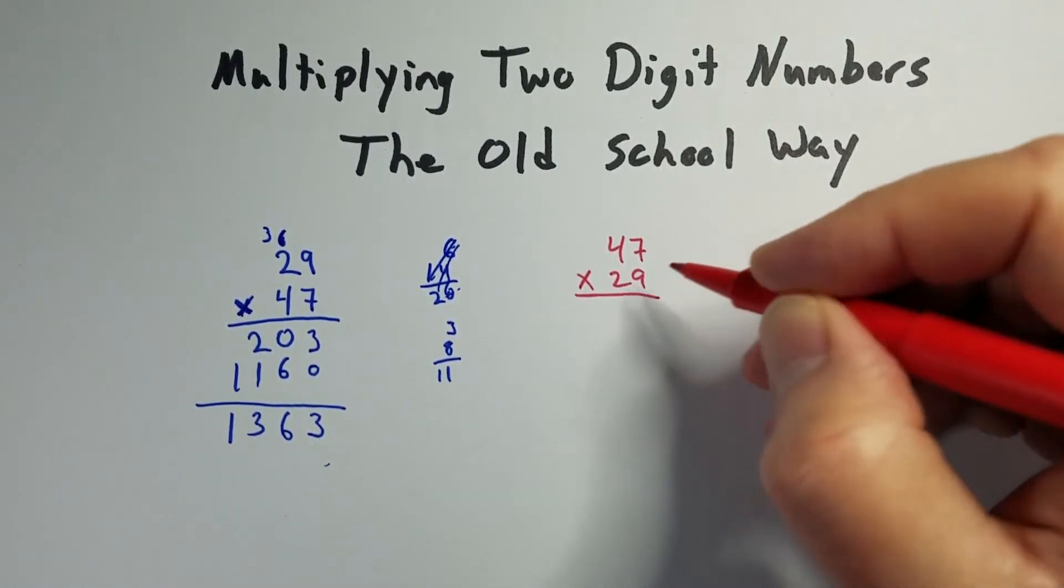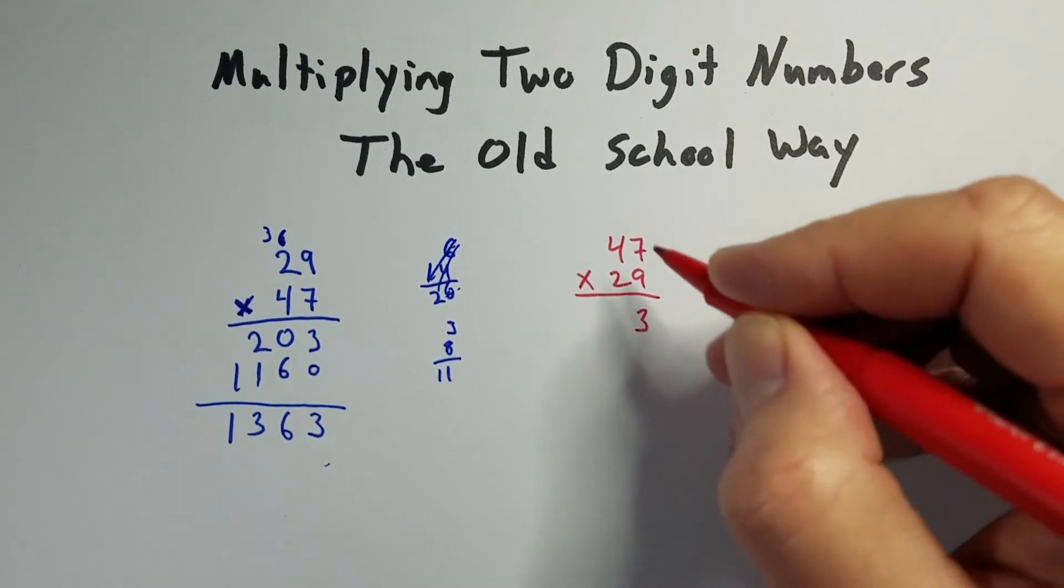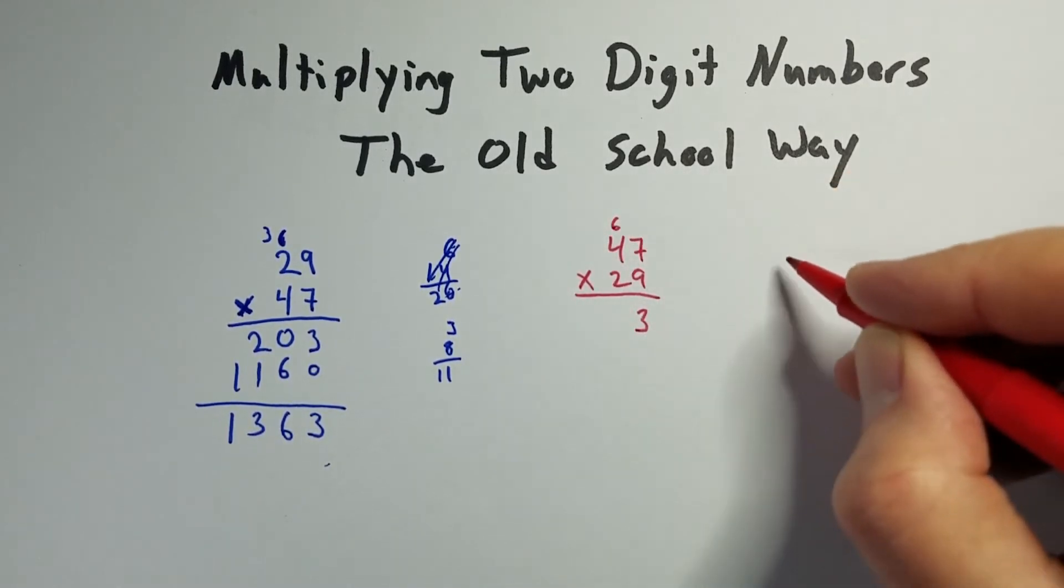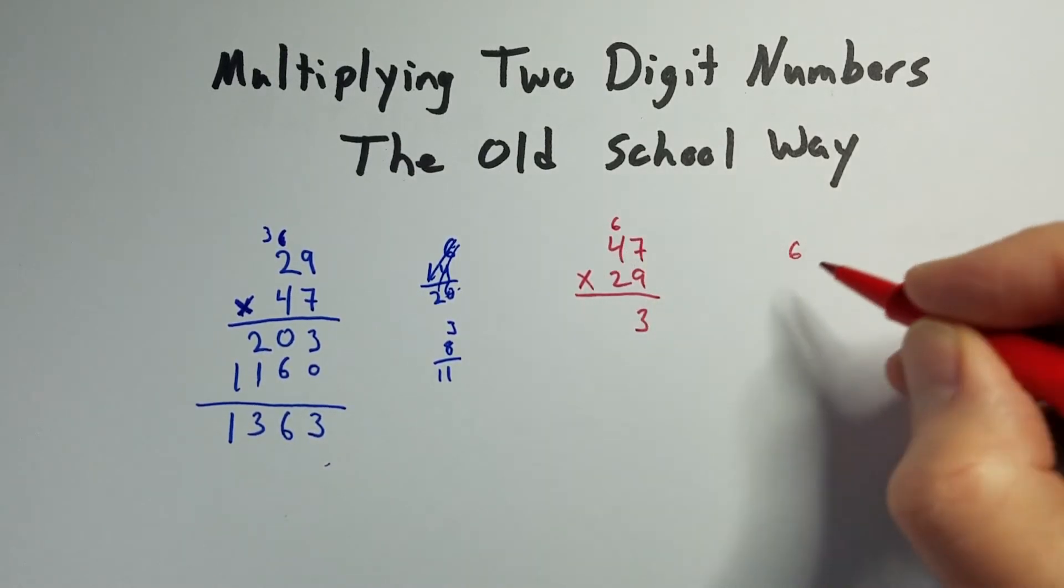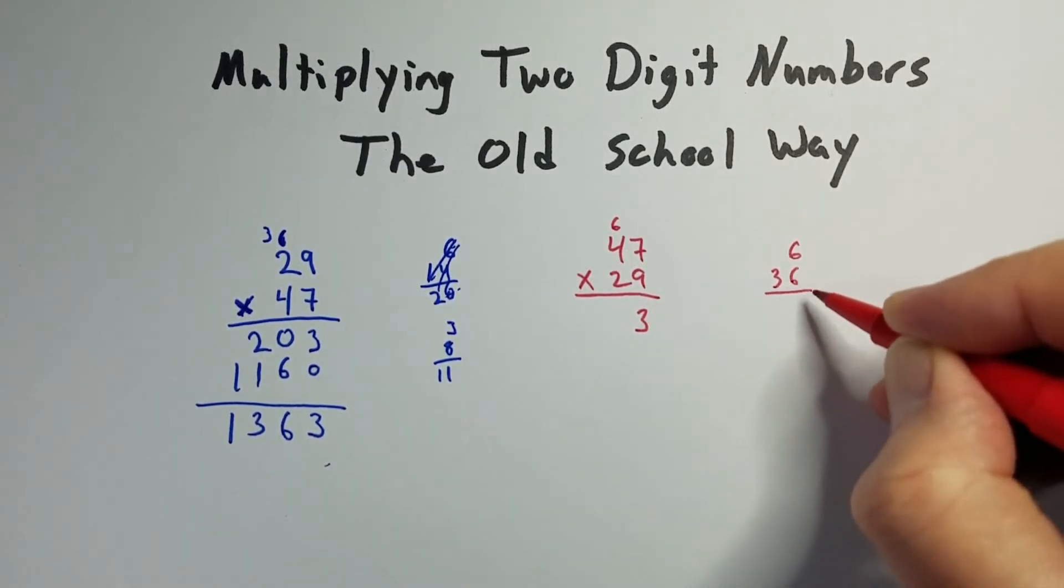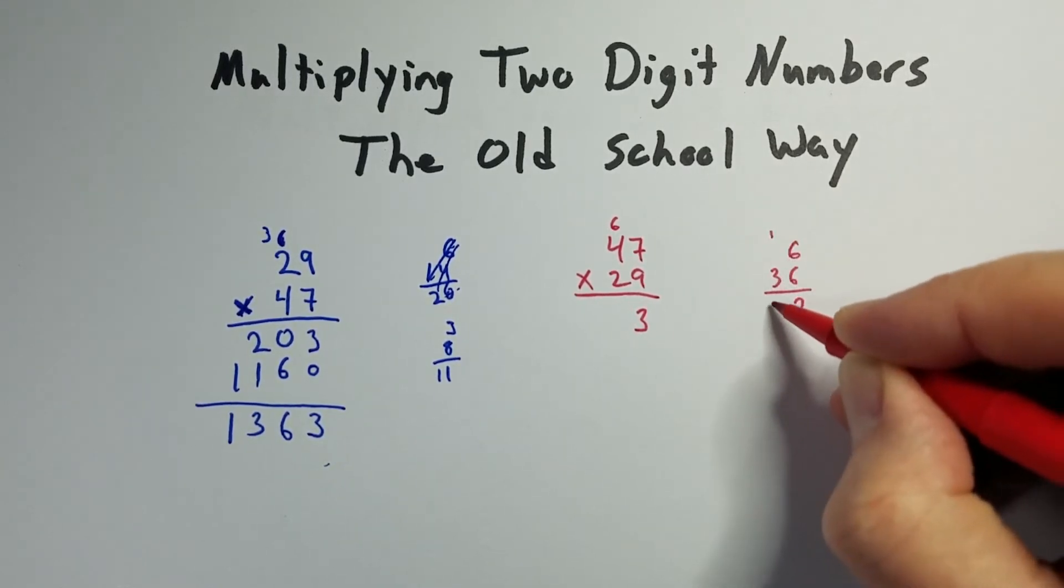So 9 times 7 is again 63. Carry the 3 down. Bring the 6 up. 9 times 4 is 36. So we already got a 6, so that's going to be a 2. Bring a 1 up. So that's going to be 42.